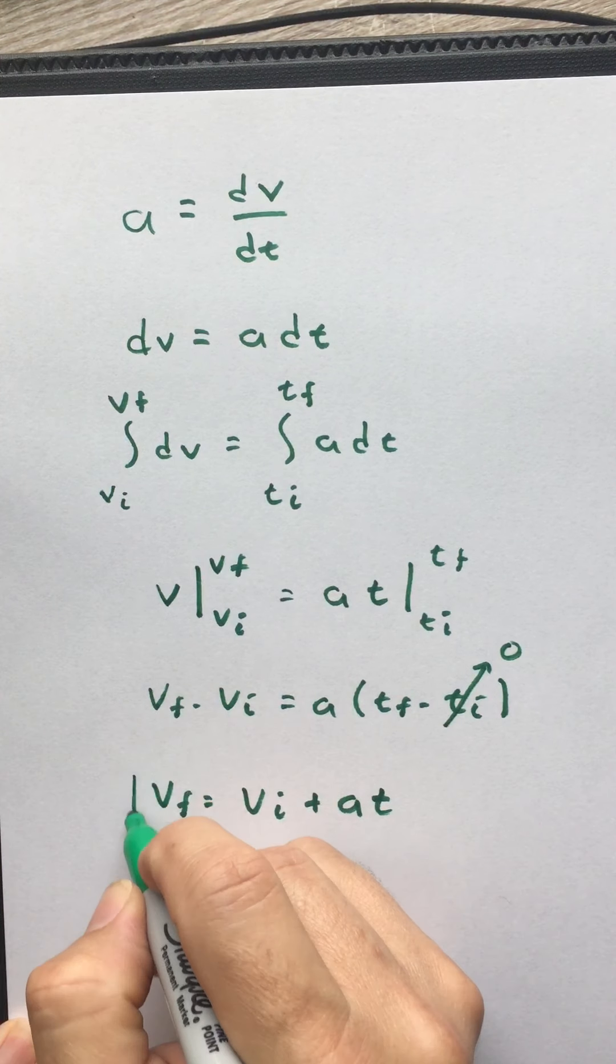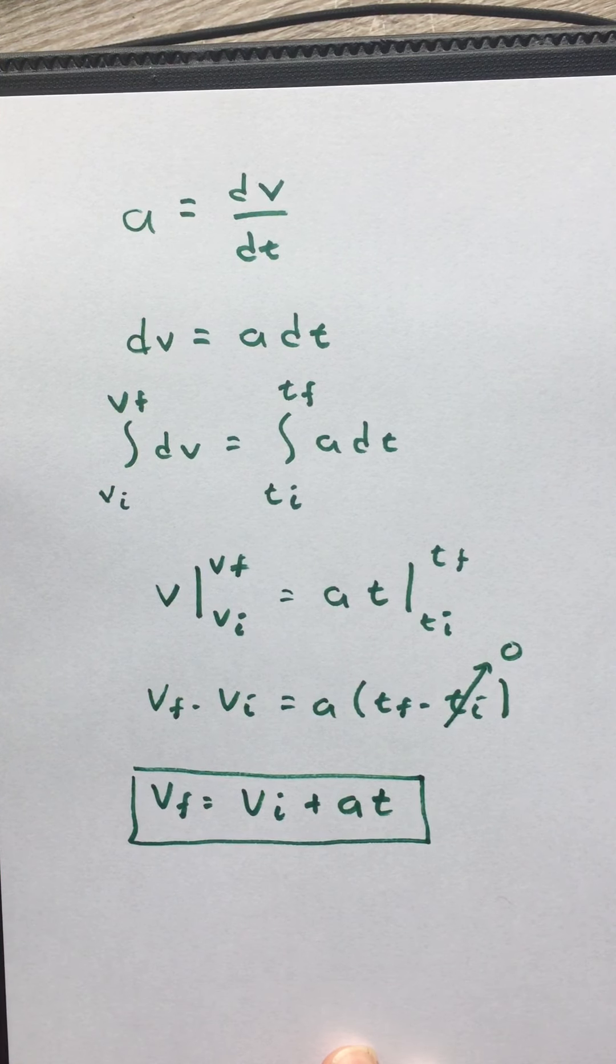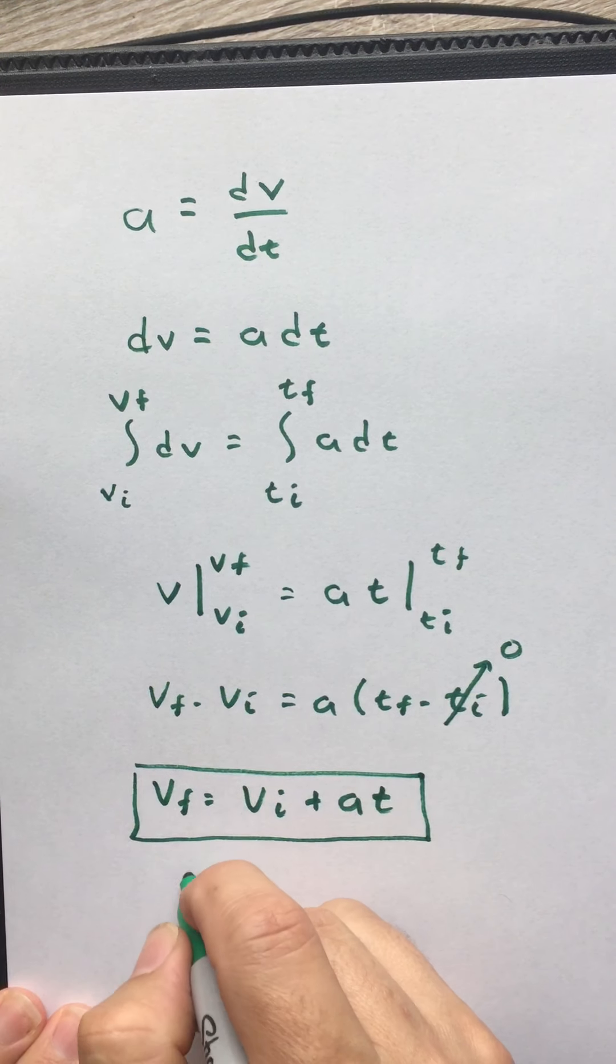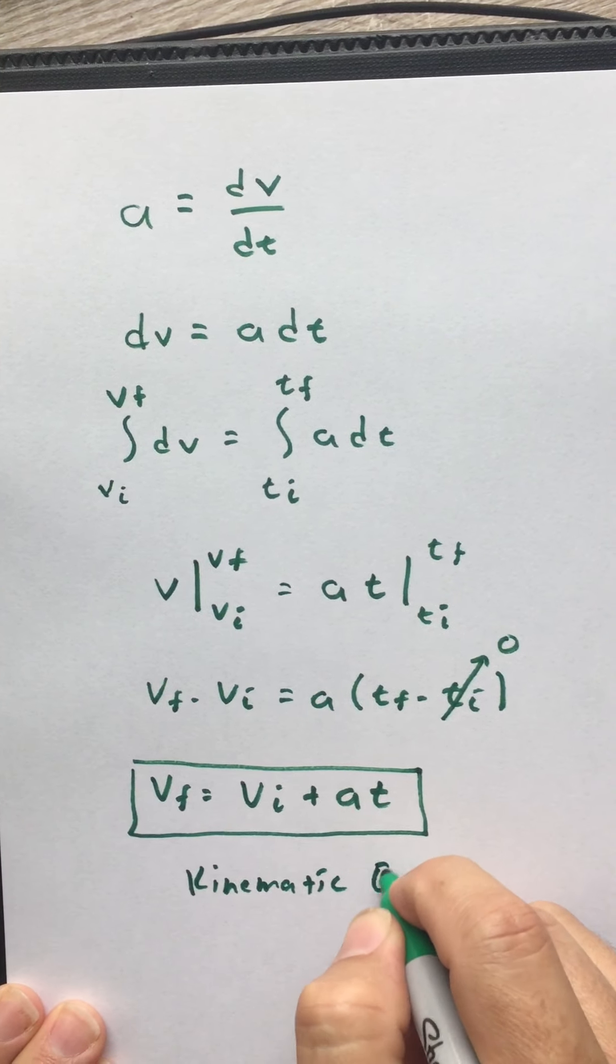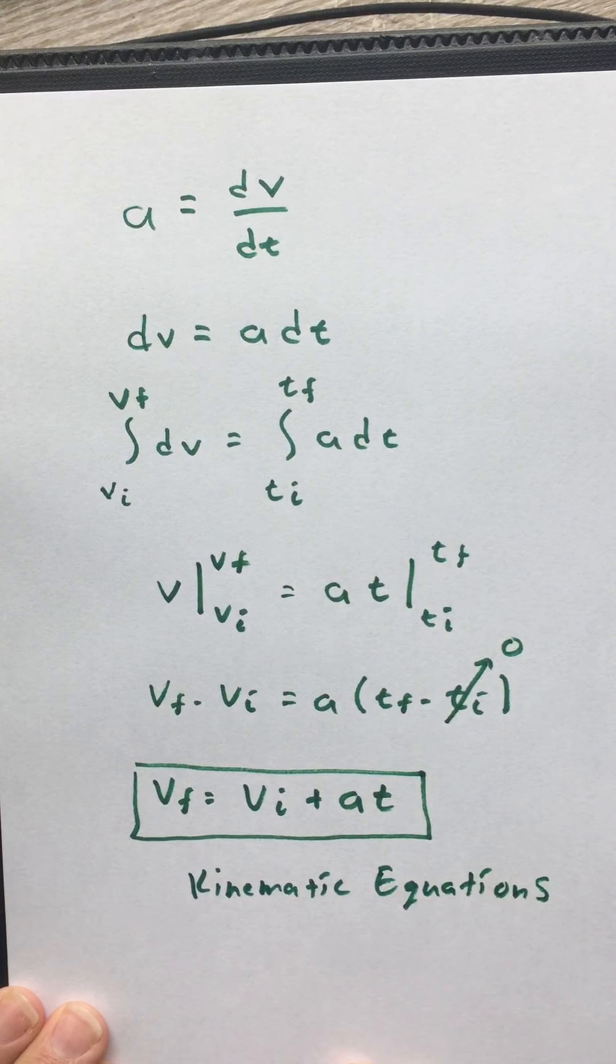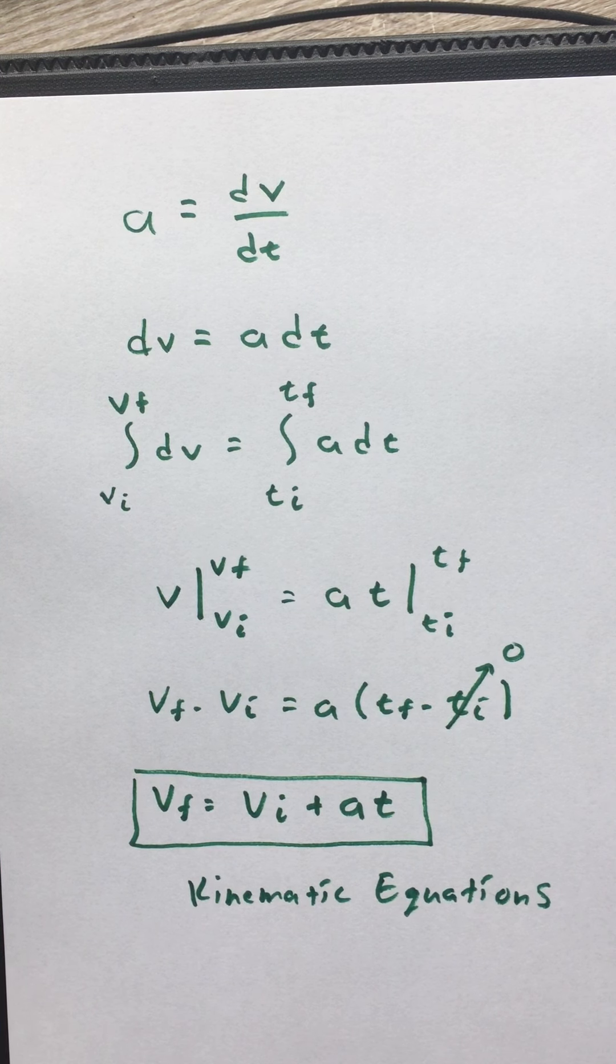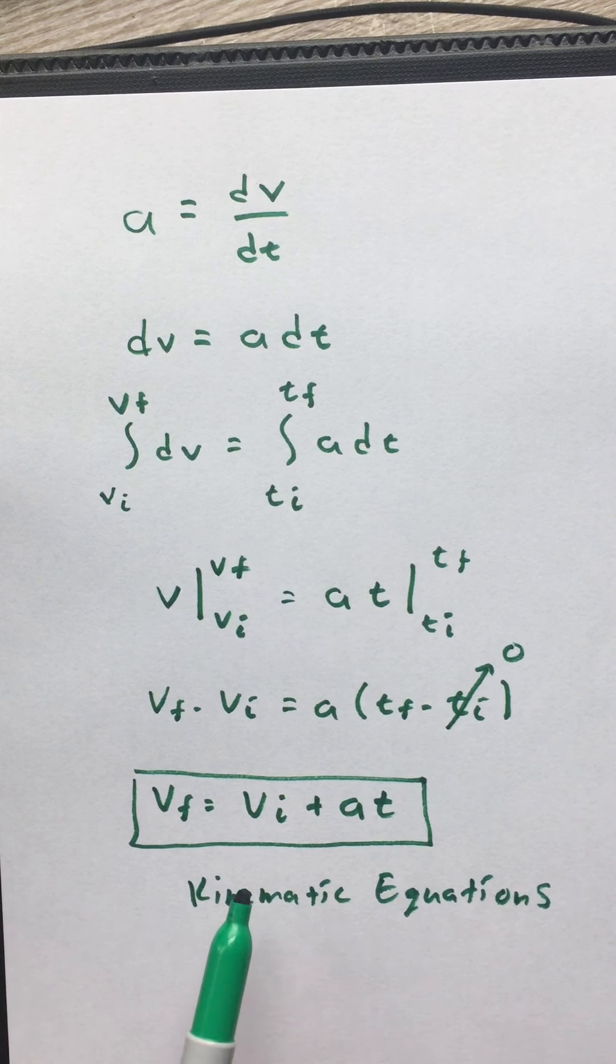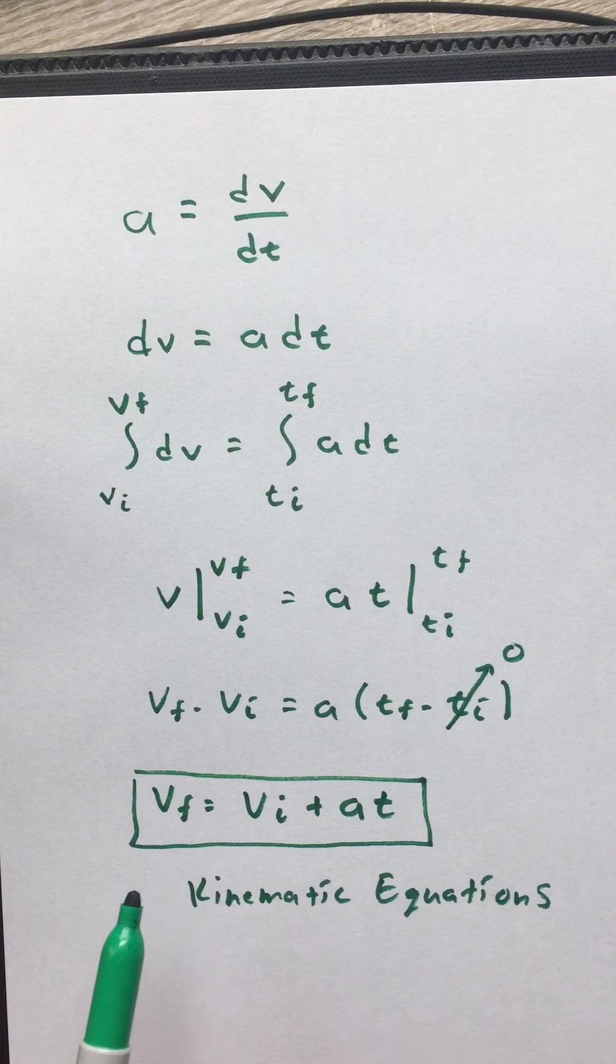Now, if you've taken a physics class before, you've seen this equation. This is one of a set of equations called kinematic equations. Kinematic equations are very useful for analyzing motion without regards to anything that produces that motion. In other words, we're going to learn later that accelerations are produced by what we call forces. But if we don't care about what produces an acceleration or what was involved in instigating this motion, if we don't care about any of that, kinematic equations are really useful for analyzing the motion of objects.